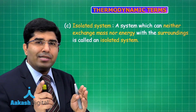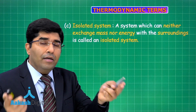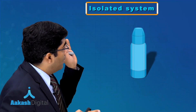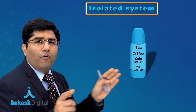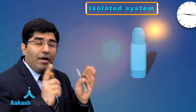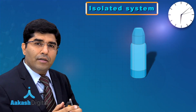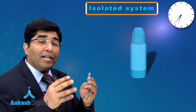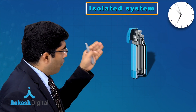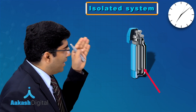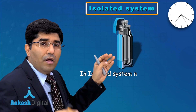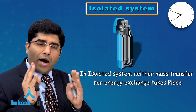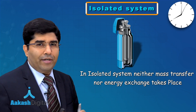An isolated system is one in which neither mass nor heat transfer is possible. For example, a thermos flask — whether you keep tea, coffee, cold water, or hot water in the morning, you will get the same temperature in the evening. If you look at the cross-section of a thermos flask, there is insulation inside. Systems in which neither mass transfer nor heat transfer is possible are called isolated systems.